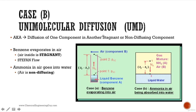Let's talk about unimolecular diffusion. As the name implies, there is only one molecule or species going to diffuse. It is also known as diffusion of one component in another stagnant or non-diffusing component. The other medium is either stagnant or it will not diffuse.